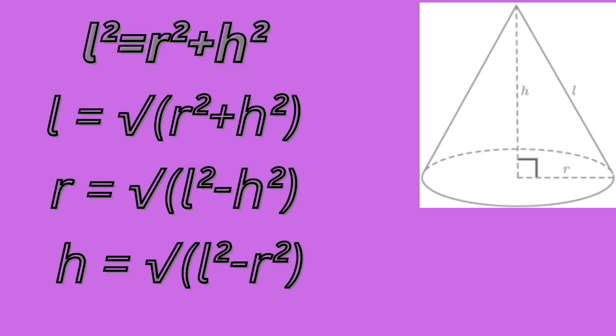The right circular cone is the cone in which the line of the axis is perpendicular to the base. It has a flat surface and a curved surface.